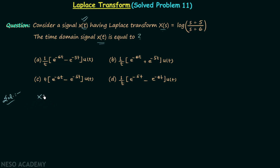We are given the Laplace transform X(s) and we are required to calculate its corresponding time domain signal X(t). This is the case of inverse Laplace transform. We need to perform the inverse Laplace transform, but don't use the formula from the first lecture because it will make things complicated. Instead, we will simplify the Laplace transform to obtain known Laplace transforms.